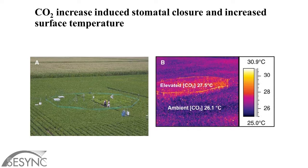Stomata are really important — that's where CO2 goes into the plant and water vapor comes out. Water escapes when those pores are open. What people know now is that when you elevate CO2, plants don't need to keep their stomata open so much, because they're getting more CO2. They don't have to have them open to take in more. So their stomata close.